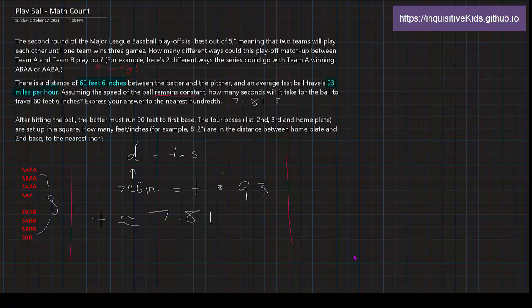After hitting the ball, the batter must run 90 feet to first base. The four bases - first, second, third, and home plate - for those of you who do not play softball or baseball, are set up in a square. How many feet or inches, for example 68 feet 2 inches, are the distance between home plate and second base to the nearest inch?